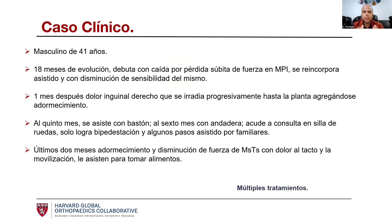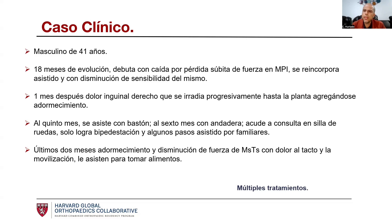Para respaldar esta información presentamos un caso clínico. Se trata de un paciente masculino de 41 años que acude tras 18 meses de evolución. Inició en su trabajo cuando de pronto se cayó porque perdió la fuerza en su pierna izquierda; los compañeros lo ayudaron a reincorporarse, y si bien ya no sentía esa falta de fuerza, tenía una disminución de sensibilidad con la extremidad dormida. Fíjense cómo debuta con las extremidades inferiores, producto de la variedad de la mielopatía.